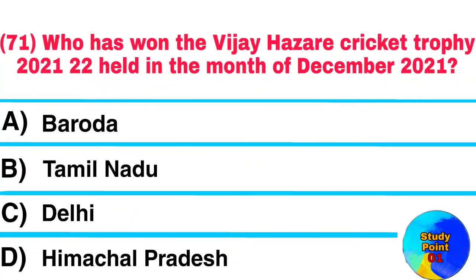Question No. 71. Who has won the Vijay Hazare Cricket Trophy 2021-22 held in the month of December 2021? Answer: Himachal Pradesh.